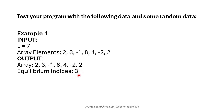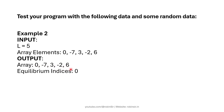In the next example, L is 5, so we have five elements. The equilibrium index is 0. At index 0 we have the value 0. On its left there are no elements, so we assume the left sum is 0. On the right: -7 + 3 = -4, then -4 + (-2) = -6, then -6 + 6 = 0. So the right sum is also 0, and that's why index 0 is the equilibrium index.